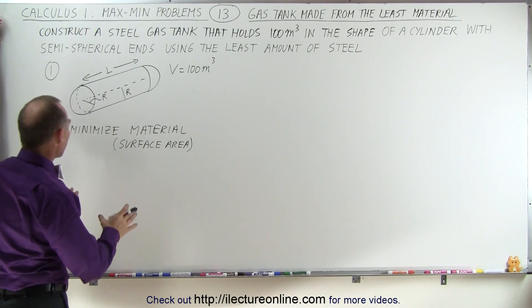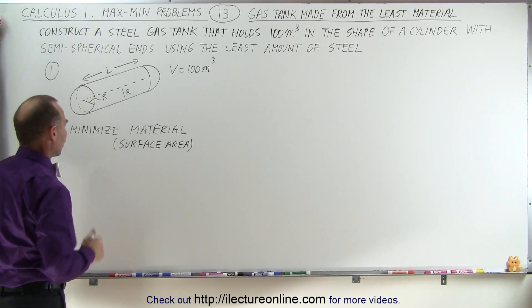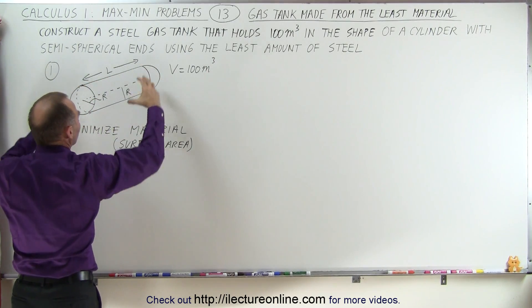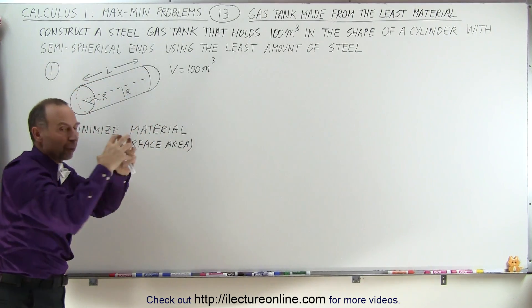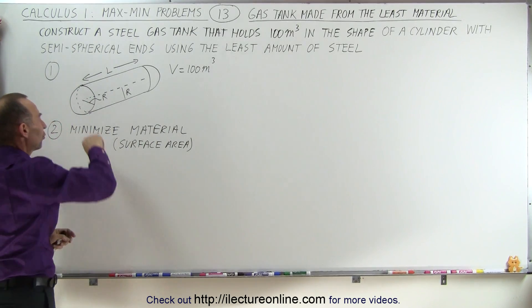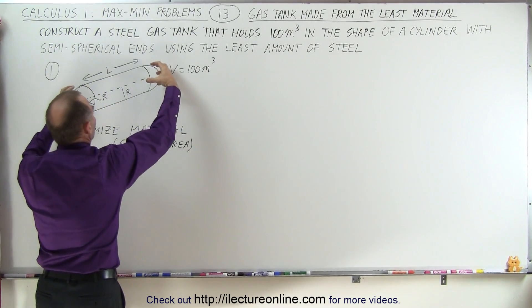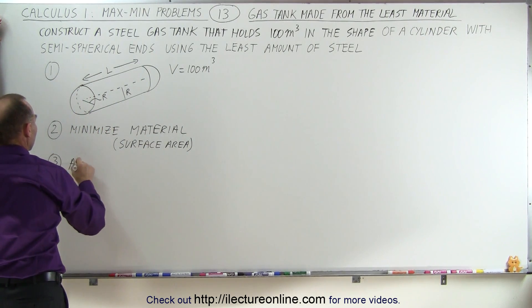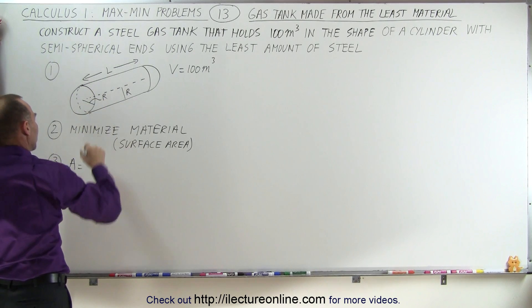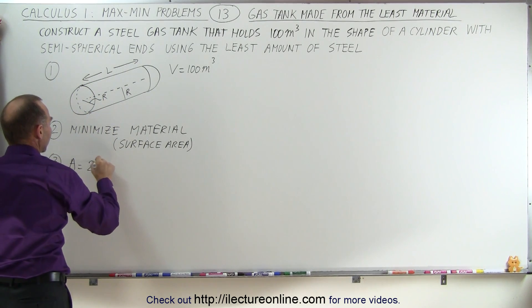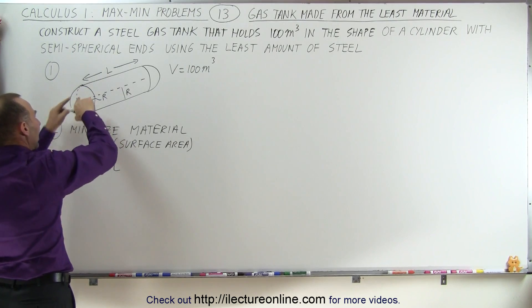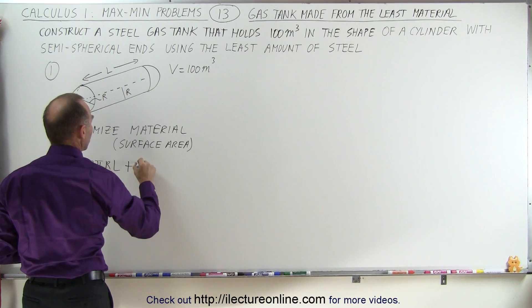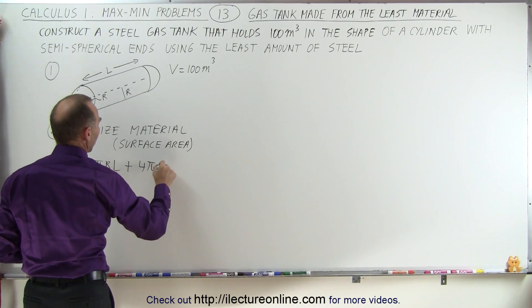Next, we need to come up with an equation that determines the surface area. Notice the surface area has a cylindrical part and the two semispheres. Together, the semispheres form a complete sphere, so it's the surface area of the cylindrical part and the surface area of basically a sphere. We can write that the area is equal to 2πrl — the circumference times the length — plus the surface area of a complete sphere, which is 4πr².